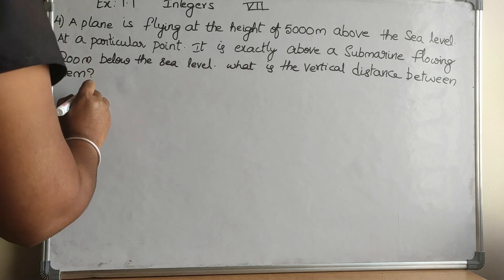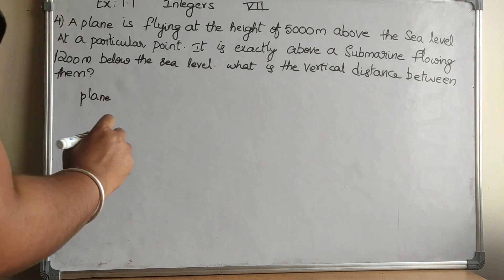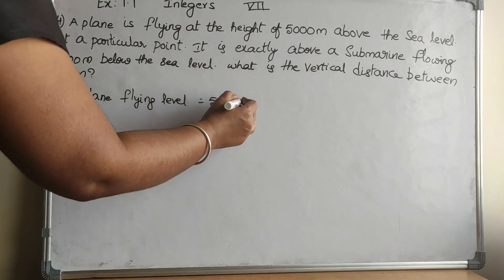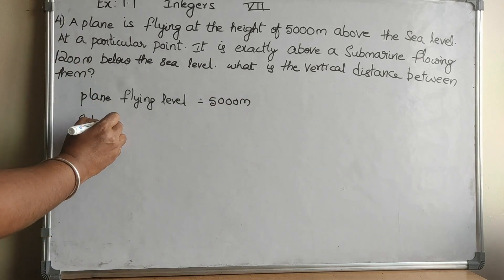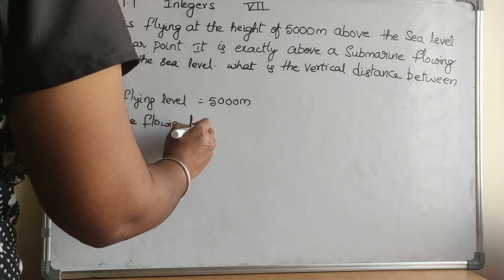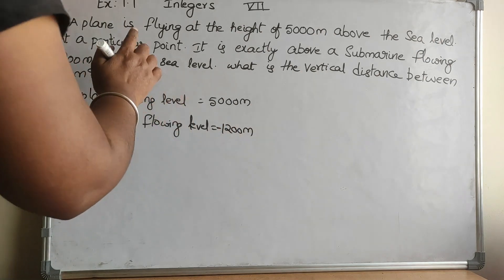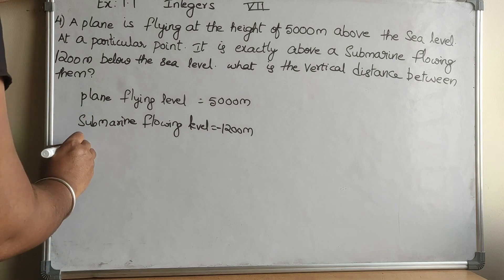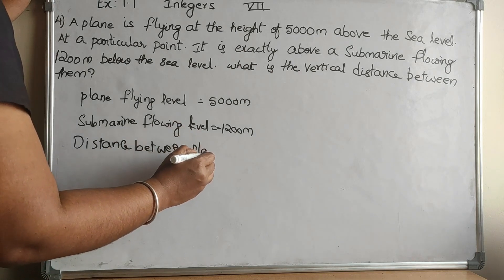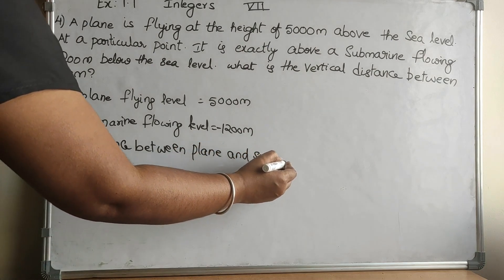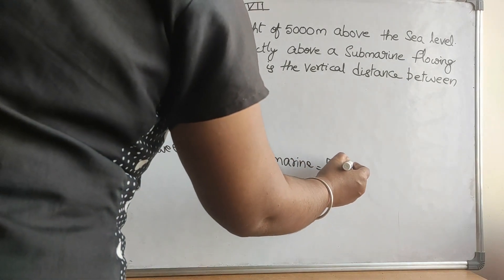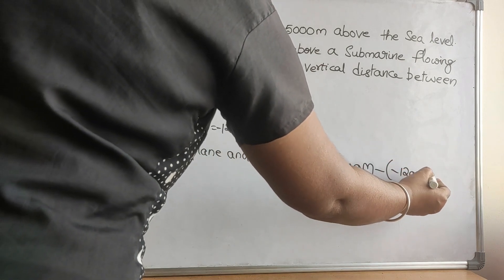The plane's flying level is 5000 meters. The submarine's level is -1200 meters, since it is below sea level. The distance between the plane and submarine is 5000 meters minus (-1200 meters).